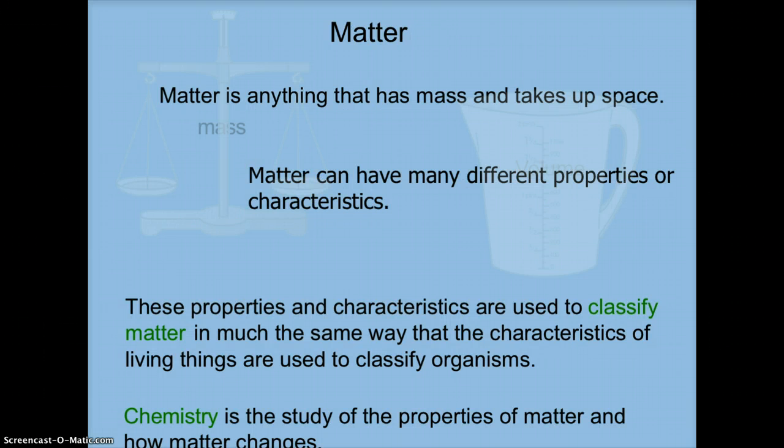Matter is anything that has mass and takes up space, and we gave the example, and we talked about whether or not light is an example of matter. Matter can have many different properties or characteristics. These properties and characteristics are used to classify matter in much the same way that the characteristics of living things are used to classify organisms. And chemistry, what we're going to be studying for the next several weeks, is the study of the properties of matter and how matter changes.